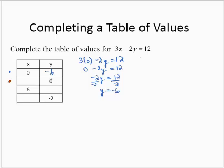What if y equals 0? 3 times x minus 2 times 0 is equal to 12. 3x minus 0 is 12. 3x is 12. And dividing by 3, x is 4.